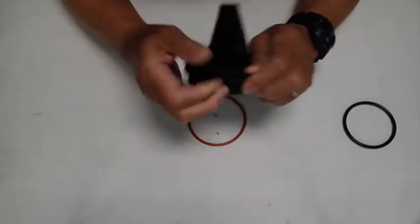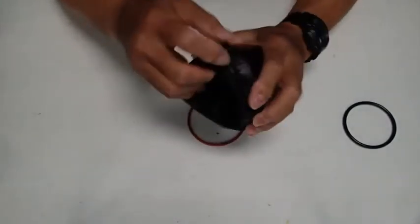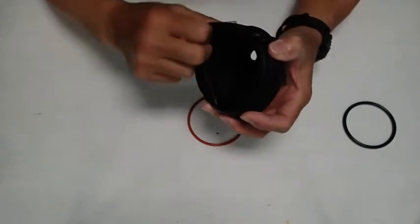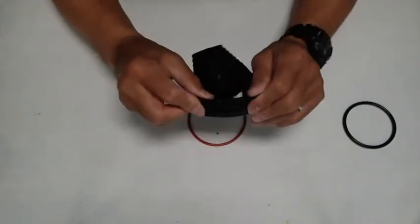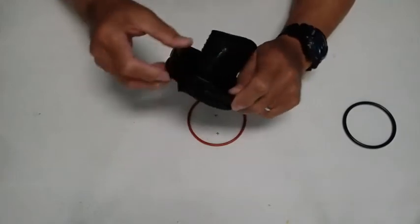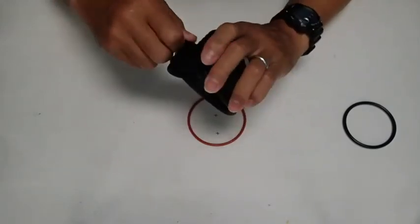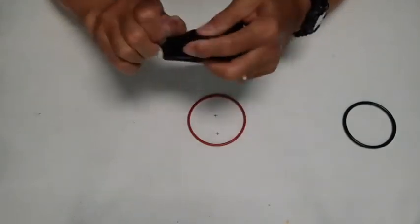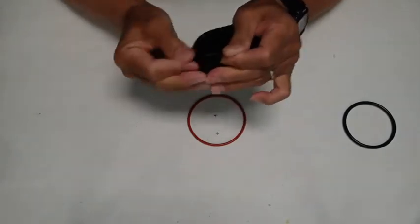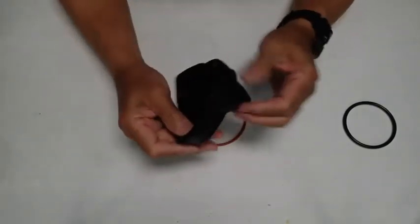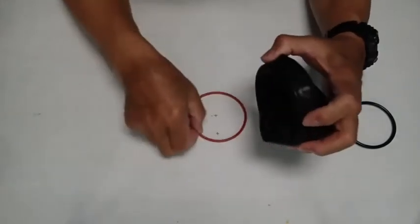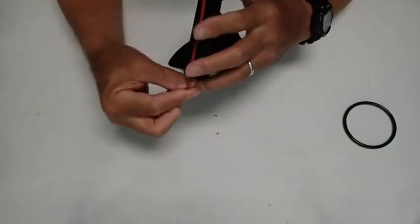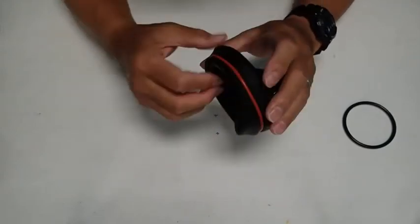What you need to do is take the silicone seal and stick it on the wrist component like you might ordinarily do. You want to make sure that it's approximately even with the top of the ring, and then you take the narrower O-ring.